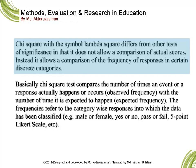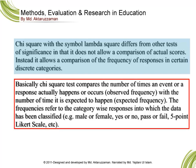Instead, chi-square allows a comparison of the frequency of responses in certain discrete categories. Basically, the chi-square test compares the number of times an event or a response actually happens — which is the observed frequency — with the number of times it is expected to happen, which is the expected frequency.